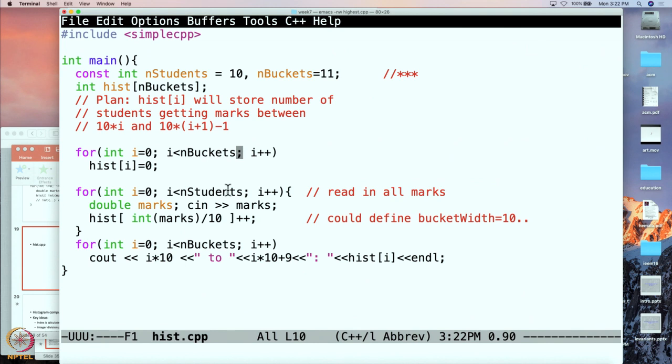We set all the histograms to be initially 0. Then we are going to read in all the marks, and this time instead of saying 100 or 10, we say nStudents to alert the reader that this is being done once for every student. Then we read in the marks and divide by 10 after converting to integer. I could have written this 10 as the width of a bucket, but I am being a little bit sloppy here.